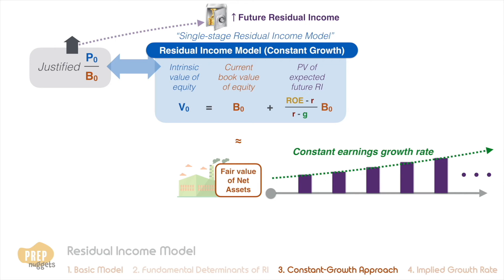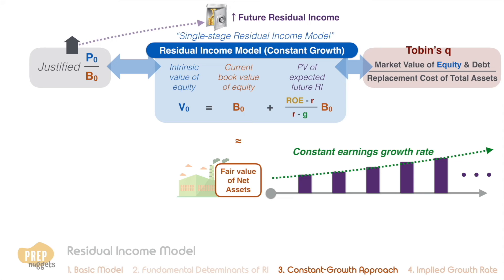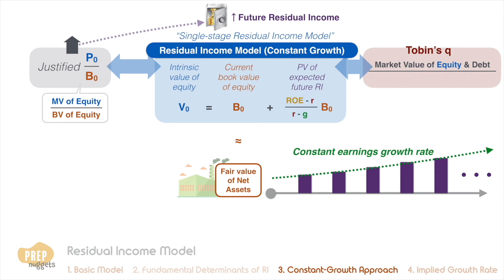Another closely related concept is Tobin's Q — the ratio of the market value of debt and equity to the replacement cost of total assets. Although similar in concept to P/B, which is market value of equity over book value of equity, Tobin's Q differs in that the numerator includes market value of debt, the denominator uses total assets rather than equity, and assets are valued at replacement cost rather than book value. A company with a higher Tobin's Q will be expected to earn higher residual income in the future.